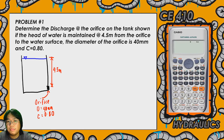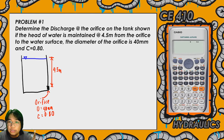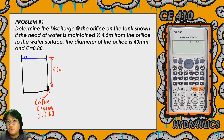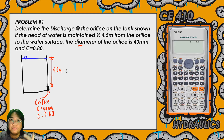Problem number one: determine the discharge or the flow rate at the orifice on the tank shown. The tank is open and the water surface is exposed to the atmosphere. The head of water is maintained at 4.5 meters, as shown in the figure. The diameter of the orifice is 40 millimeters, meaning the orifice is circular in shape, and the coefficient of discharge C is 0.8.